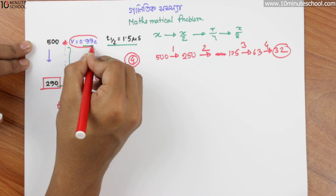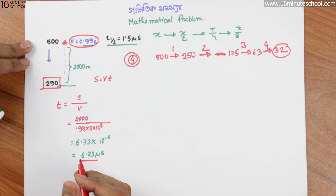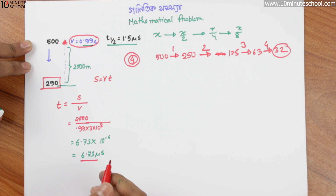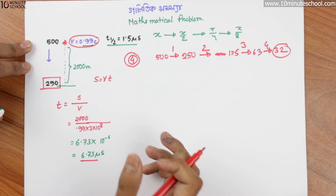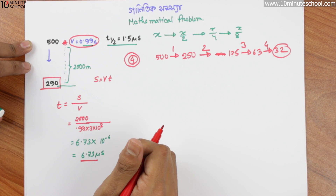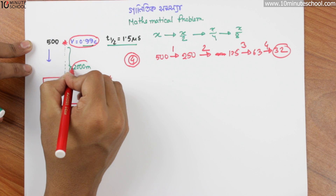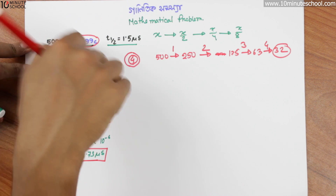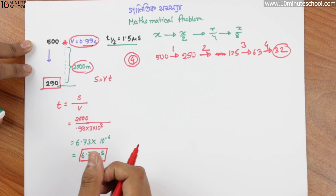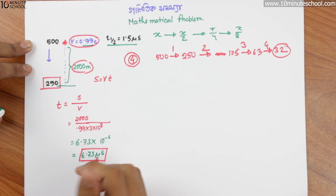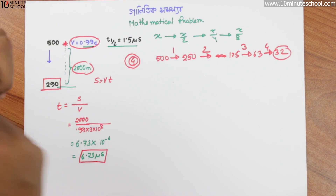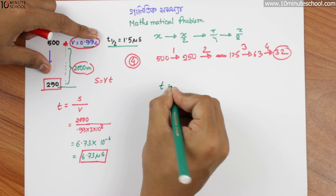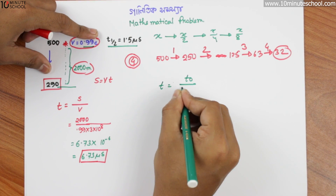I am talking about 1000 meters — it is the same as 1000 meters, and the same is 1000 meters. So we just need to use 2000 meters and 6.73 milliseconds.